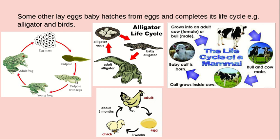The frog's eggs hatch into tadpoles. The tadpoles grow and continue the life cycle through reproduction. Similarly, an adult alligator lays eggs, baby alligators hatch and grow into big alligators, and they lay eggs again, continuing the process.